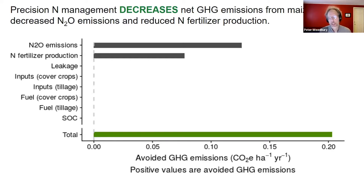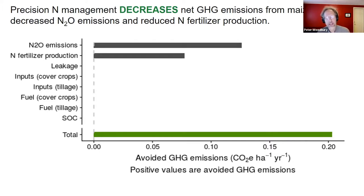The third example is precision nitrogen management — using sophisticated tools to dial back and make sure we're applying just the amount of fertilizer needed at the right time when the crop can use it. The total at the bottom shows a benefit, a decrease in greenhouse gas emissions. The decrease is due to a reduction in direct nitrous oxide emissions because we're using less fertilizer and getting better efficiency. More of the nitrogen applied is being taken up by the crop; there's less available to be lost as nitrous oxide, leached as nitrate, or lost in any other way. We're also reducing emissions associated with the production of that fertilizer.